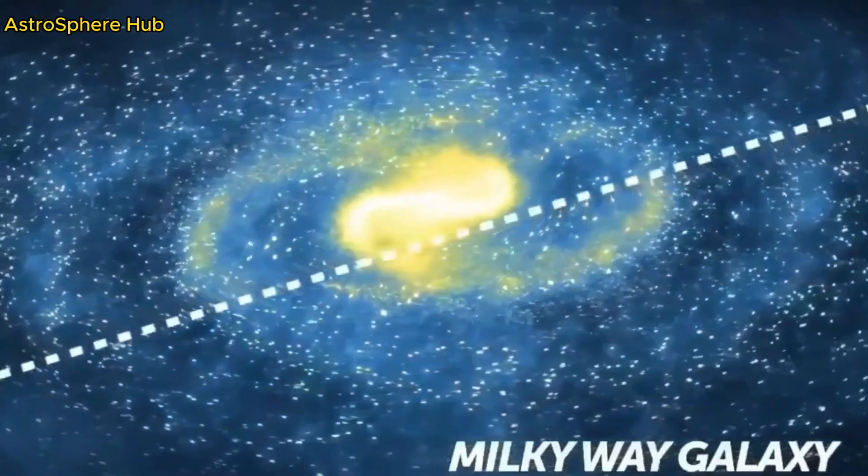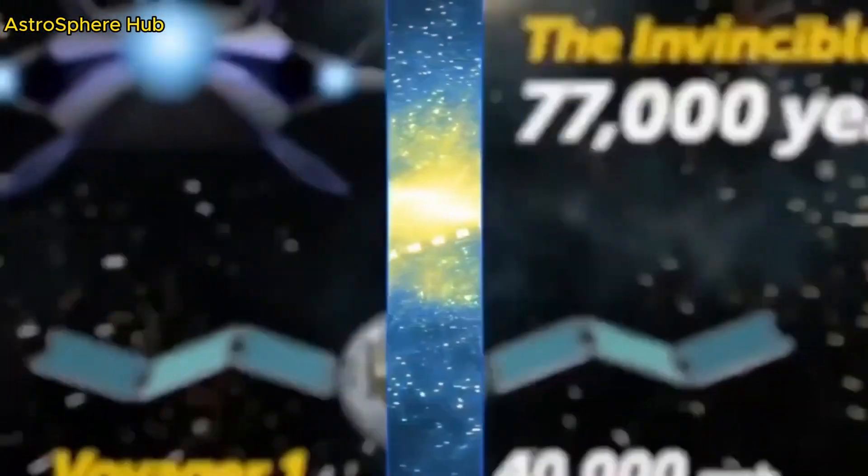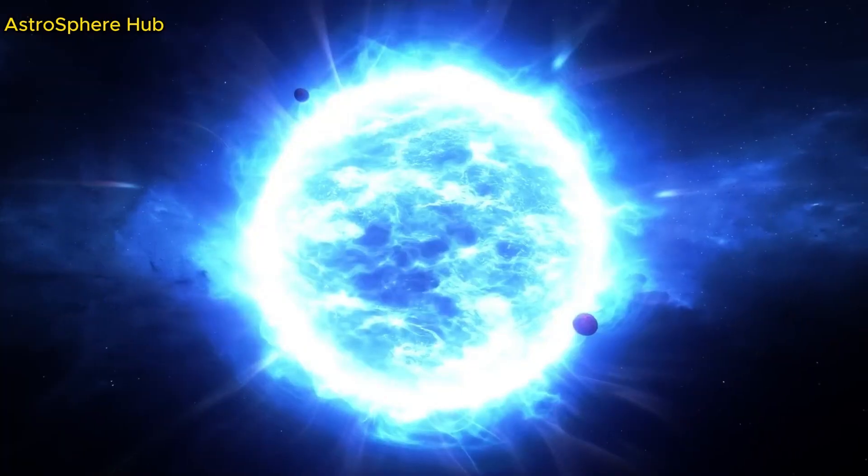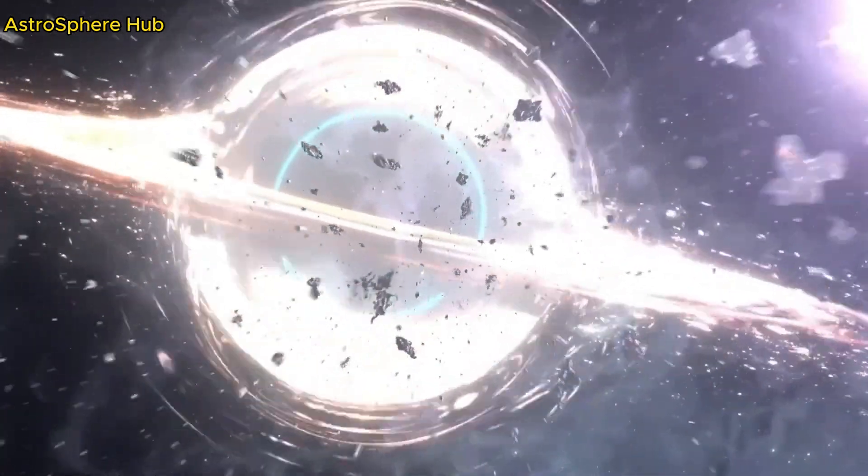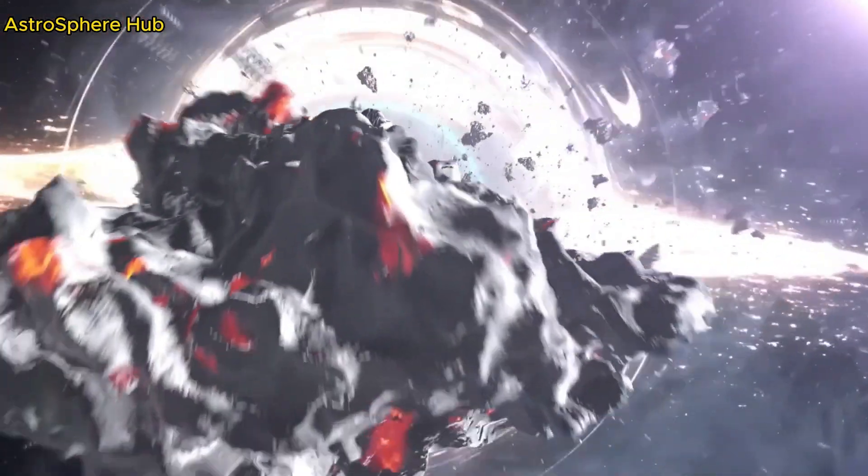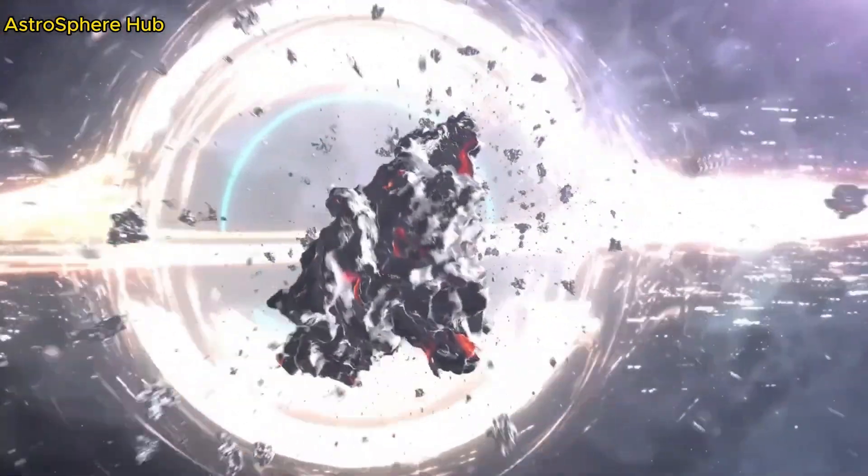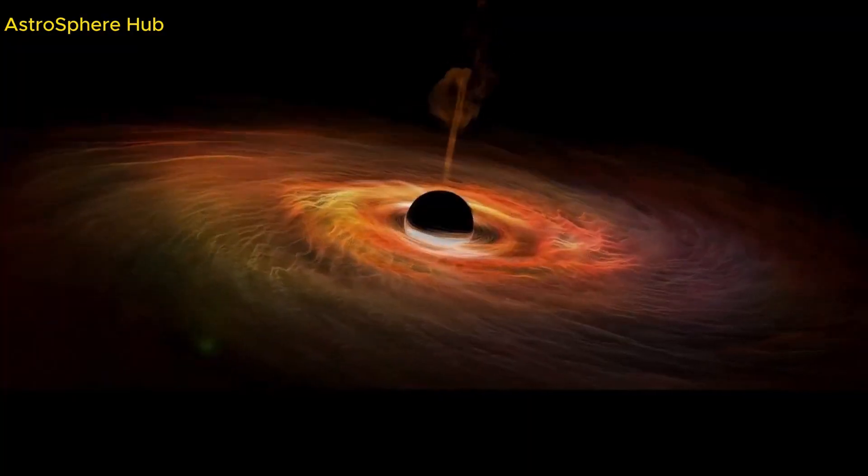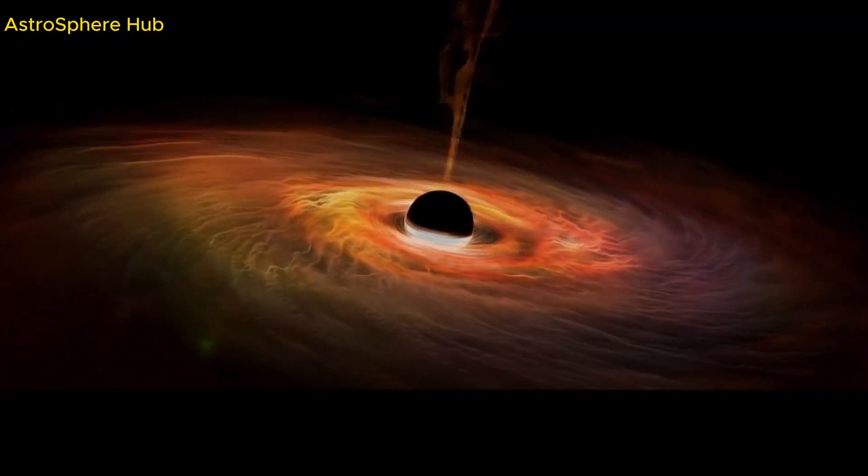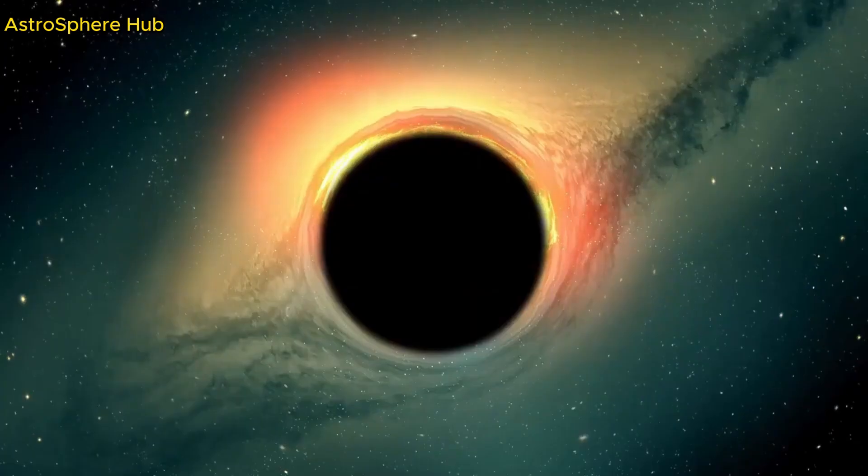Black holes are intricate space phenomena. Everything about them is complicated. When a large star, about 10 to 20 times more massive than the sun, exhausts all of its fuel, the balance between gravity and pressure breaks down, and the star collapses in on itself and goes supernova.